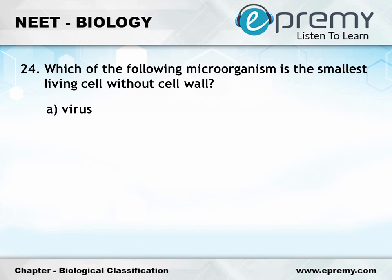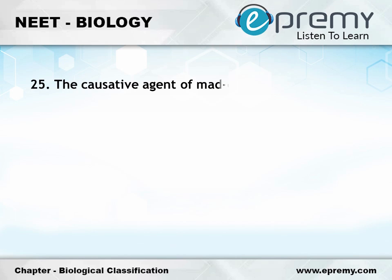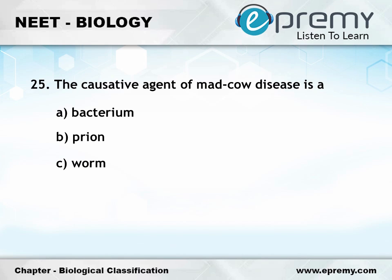Question number 24: Which of the following microorganisms is the smallest living cell without a cell wall? Option A: Virus; Option B: Archaebacteria; Option C: Mycoplasma; Option D: Eubacteria. The answer is Option C, Mycoplasma. Question number 25: The causative agent of mad cow disease is a — Option A: bacterium; Option B: prion; Option C: worm; Option D: virus. The answer is Option B, prion.